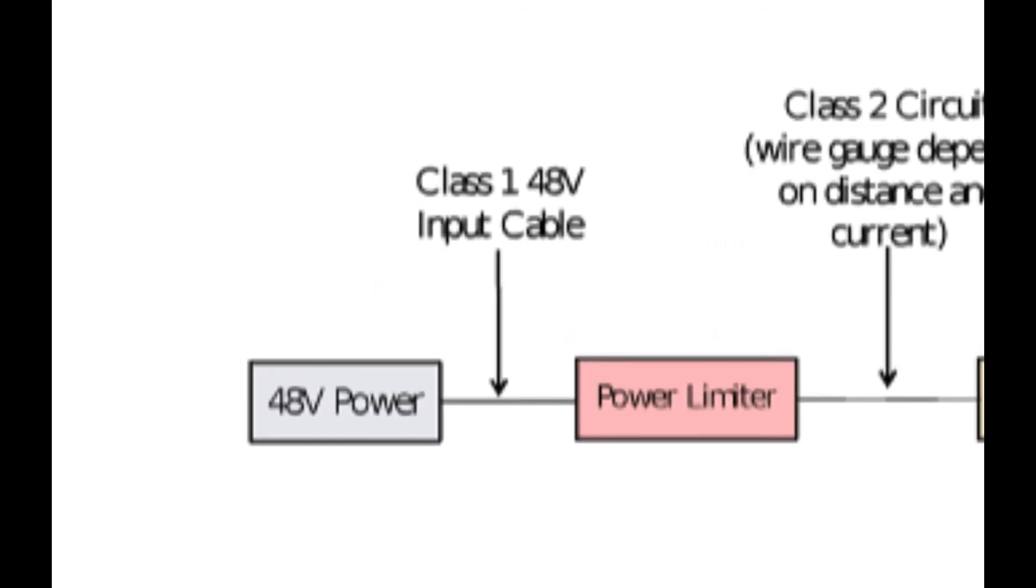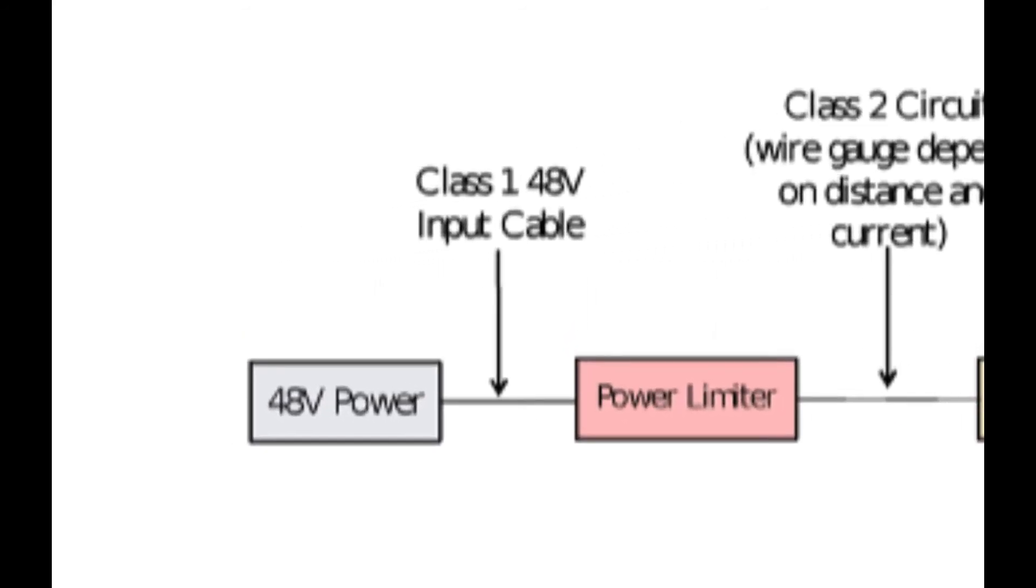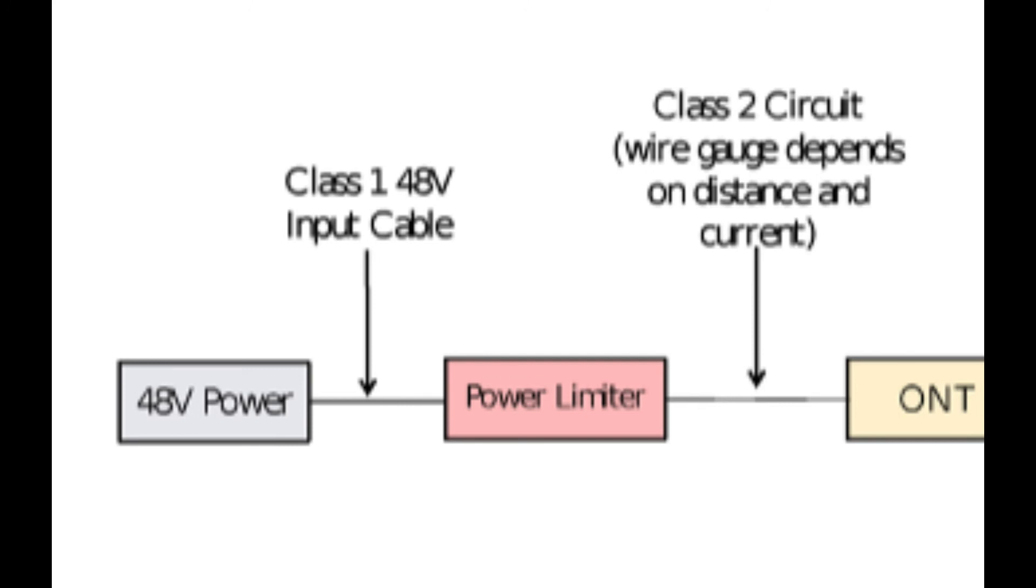The Class 1 48-volt is used to power the head end, or OLT, of the network. The power limiters are positioned at the same physical location as the passive optical splitters.